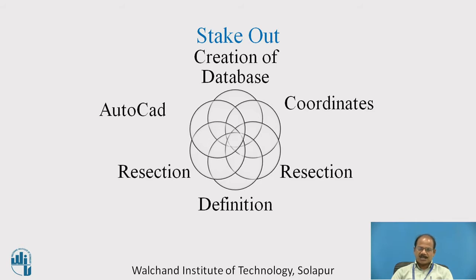There are two ways to create the database. You can directly feed the drawing as input for the stakeout survey, or you can create the coordinates of the stations from the available drawing and feed those coordinates into the total station. In both methods, it is essential to have a clear idea of the exact location and coordinates of the instrument station. The occupied station of the total station must be precisely known, and in most cases this is done using the resection method, using at least two previously available stations from a file such as AutoCAD or a coordinates file.